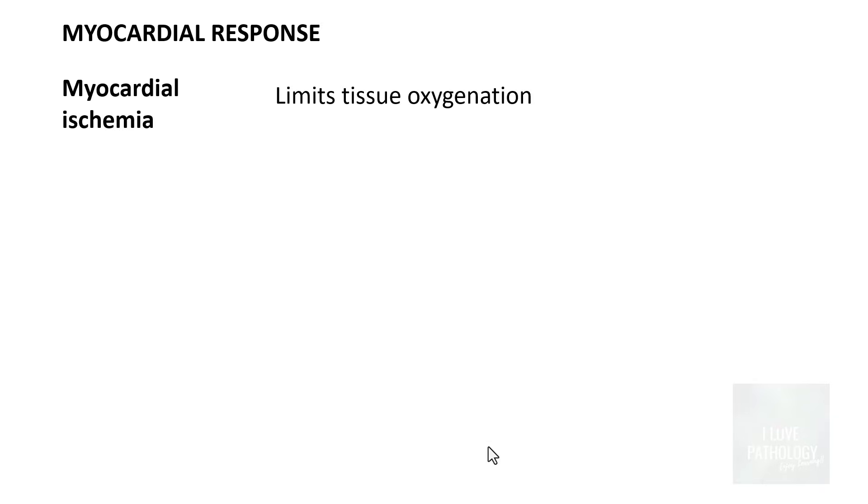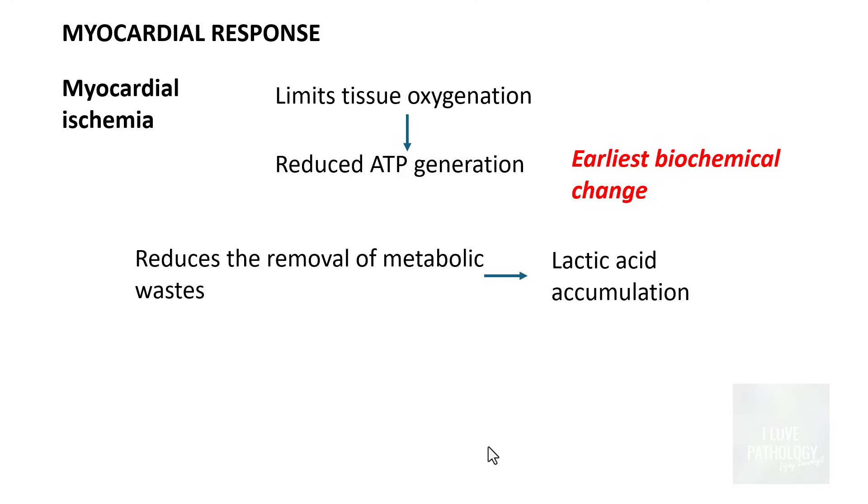Now once there is myocardial ischemia because of obstruction of the coronary blood vessels, what would be the response of the myocardium? The first and the foremost thing is that there is tissue oxygenation which is extremely reduced, leading on to decrease in the production of ATP, which we saw while we learned about the cell injury, and that is the earliest biochemical change.